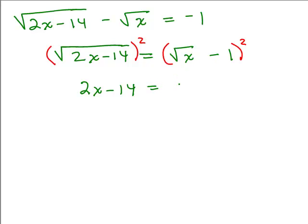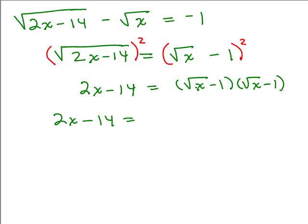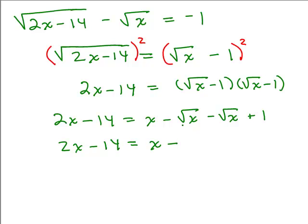On the right-hand side, notice this is a binomial squared. You can think of that as square root of x minus 1, times square root of x minus 1, and do the FOIL method. First: square root of x times square root of x is x. Outer is minus square root of x, inner is also minus square root of x, and the last is plus 1. So that gives x minus 2 square root of x plus 1. Some of you could have gone right from the binomial squared step to this result directly.